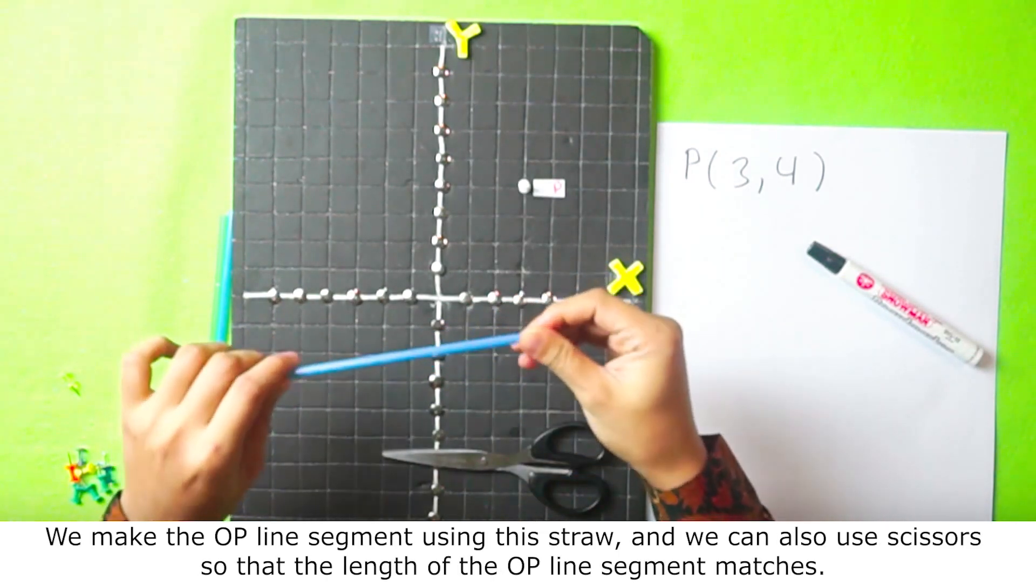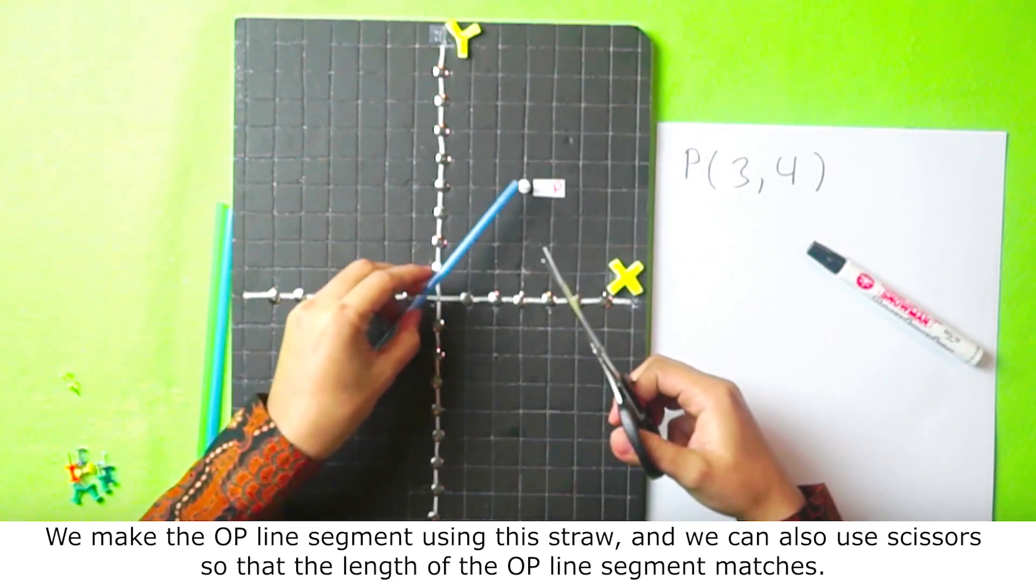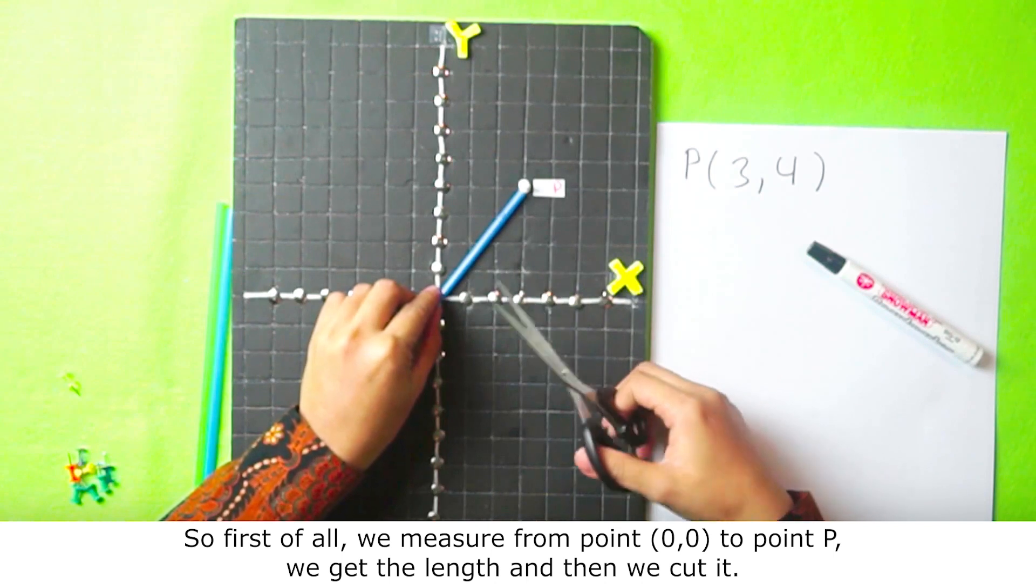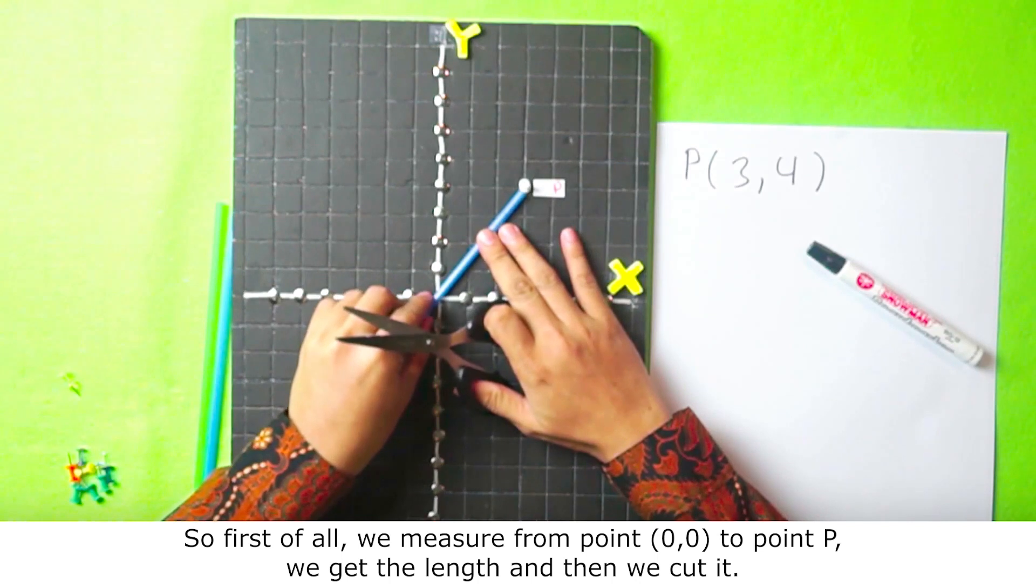We make the OP line segment using this straw, and we can also use scissors so that the length of the OP line segment matches. First of all, we measure from point 0, 0 to point P. We get the length and then we cut it.